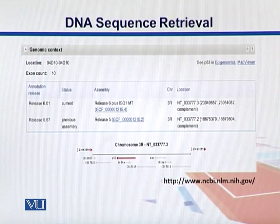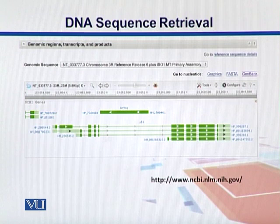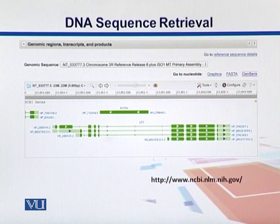We can also see the orientations and the directions in which it is going. In the genomic regions, transcripts and products tab, we can look into its products. When genes are expressed, the DNA is converted into RNA. Since it's a eukaryotic genome, there is alternative splicing, so we can find different alternative splice variants of this gene. Towards the upper right side there is written: go to nucleotides, graphics, FASTA and GenBank — these are the different views with which I can access the data files associated with this gene.